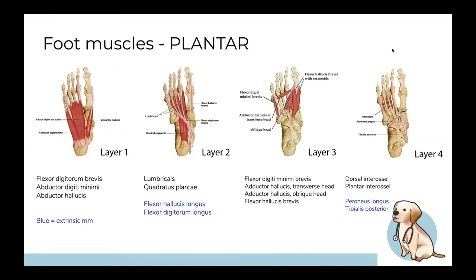The plantar side — the bottom of your foot — has four layers, literally one on top of the other like a four-layered foot sandwich. The bottom layer muscles are the thickest and biggest; moving higher up they get smaller and more specific, until they are just the interossei muscles between the metatarsals. The blue structures are extrinsic muscle tendons attaching to parts of the metatarsals.